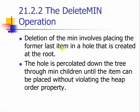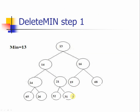Instead, come back to the description of the delete operation. To delete, we place the former last item in the hole created at the root, and the hole is percolated down the tree through the minimum children until the item can be placed without violating the heap order property. No matter what, after one deletion this space needs to be removed because we have one item short — meaning the value 31 in this example cannot find a place. Since the root has a place, let us put 31 at the root and then percolate down.